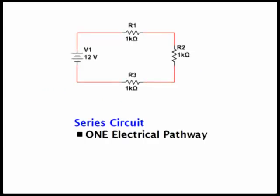First of all, let's review the differences. A series circuit has just one electrical pathway. If you take a look at the circuit, there's only one way for current to flow. Here we have the negative side of the battery. Electrons have to flow through all three resistors. It can't go any other way.